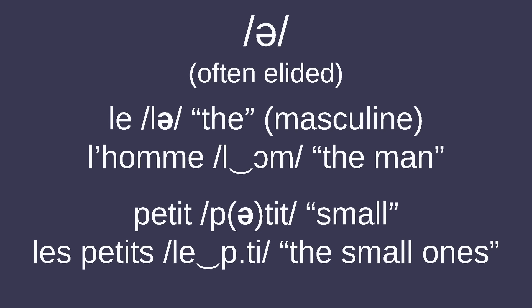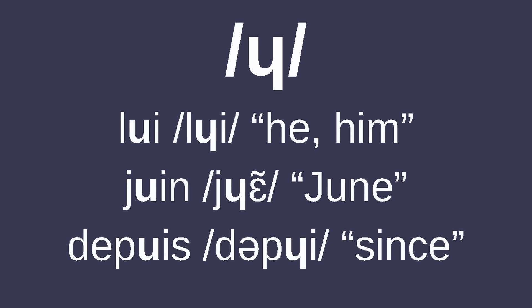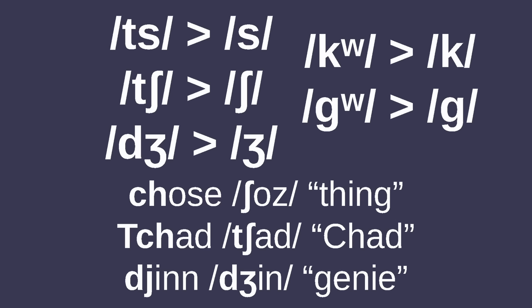French has a schwa sound which is often elided, causing syllables to span between the boundaries of words. The French rhotic is very unique, being either a voiced uvular approximant /ʁ/, voiced uvular fricative, and in some dialects a voiceless uvular fricative in some contexts. There's also the labial-palatal approximant /ɥ/, seen as the semivowel counterpart to /y/. French affricates /ts/, /tʃ/, and /dʒ/ became fricatives /s/, /ʃ/, and /ʒ/, although /tʃ/ and /dʒ/ reappeared in some loanwords as consonant clusters, and labiovelar /kw/ and /gw/ became plain /k/ and /g/.